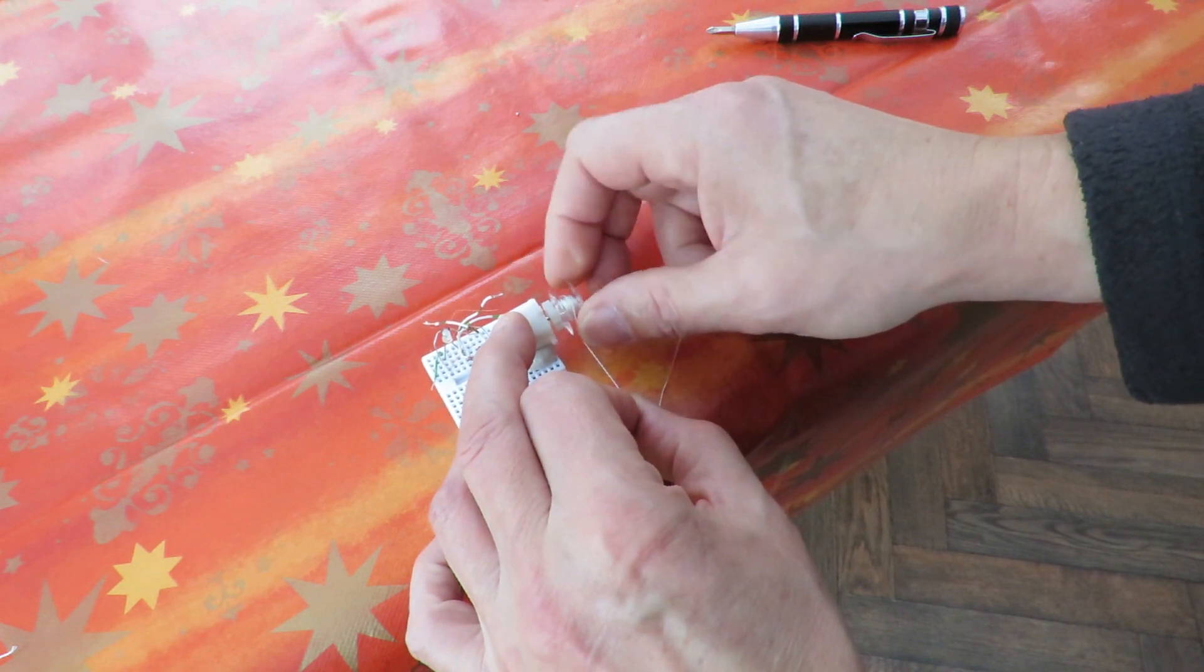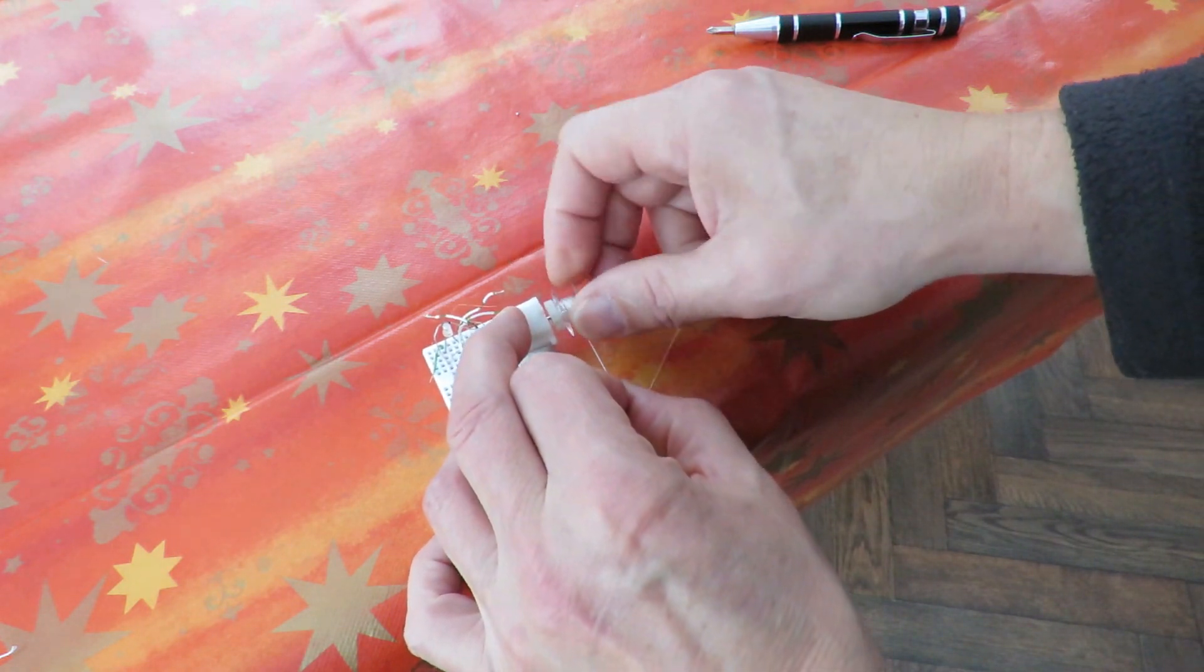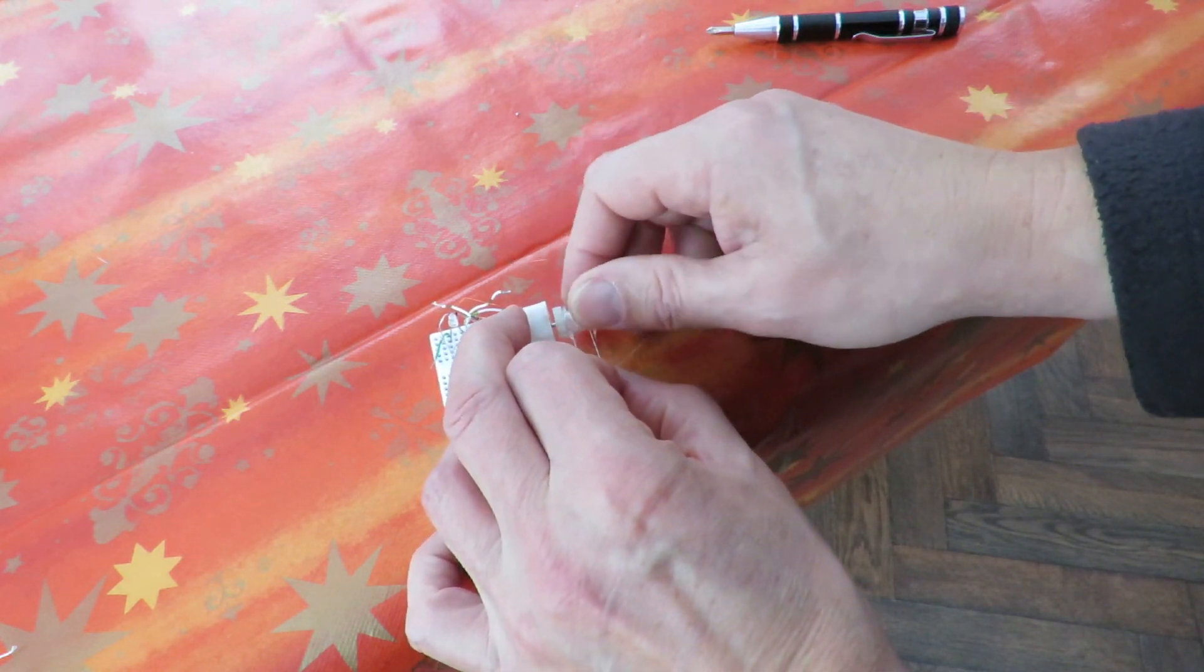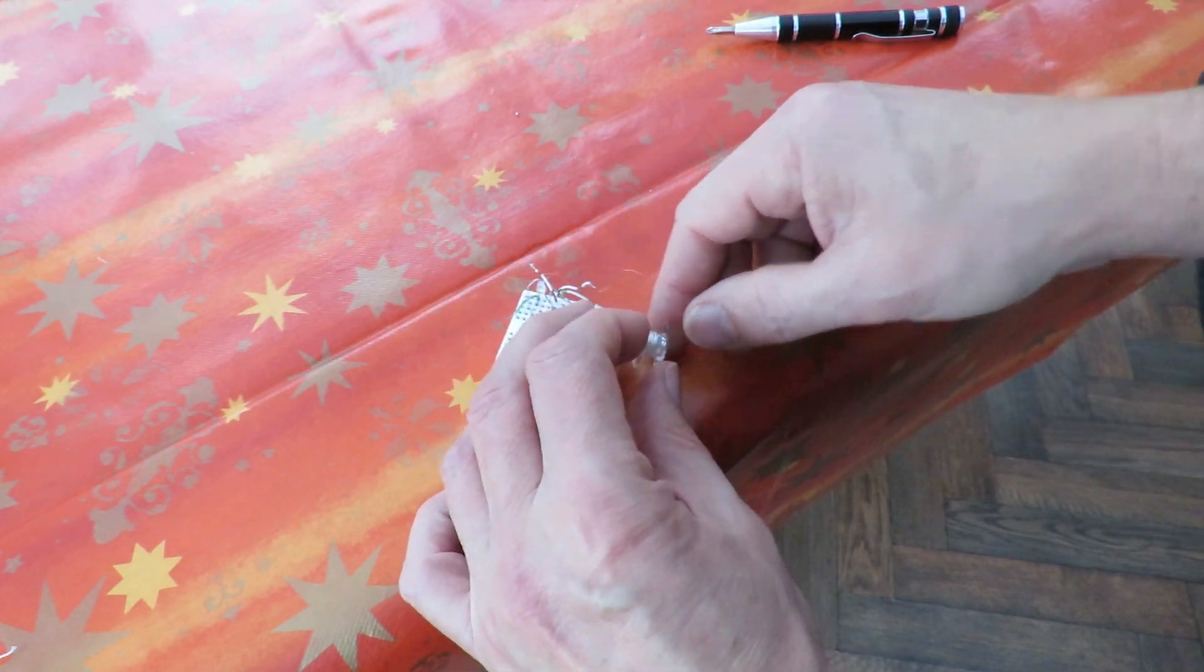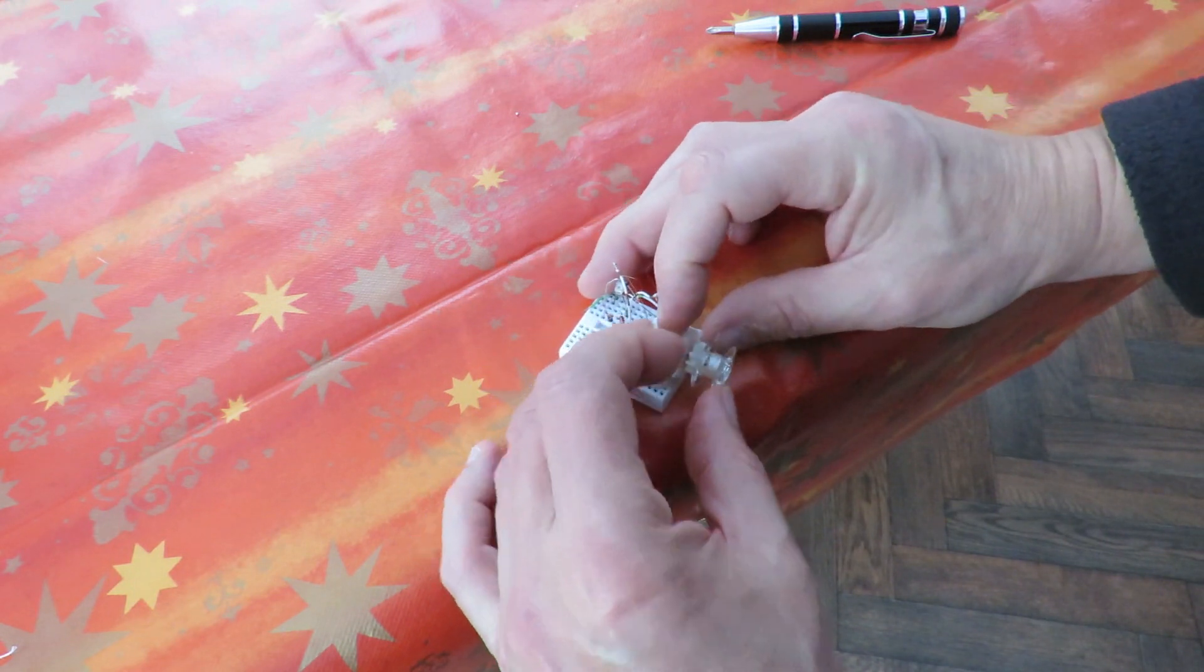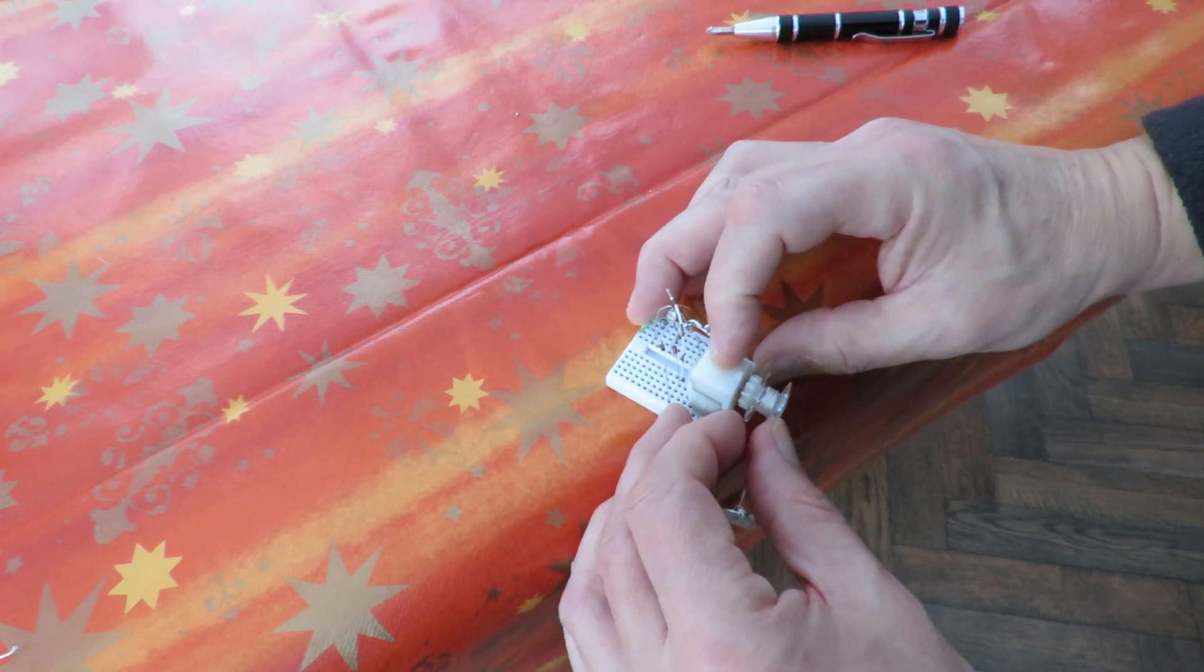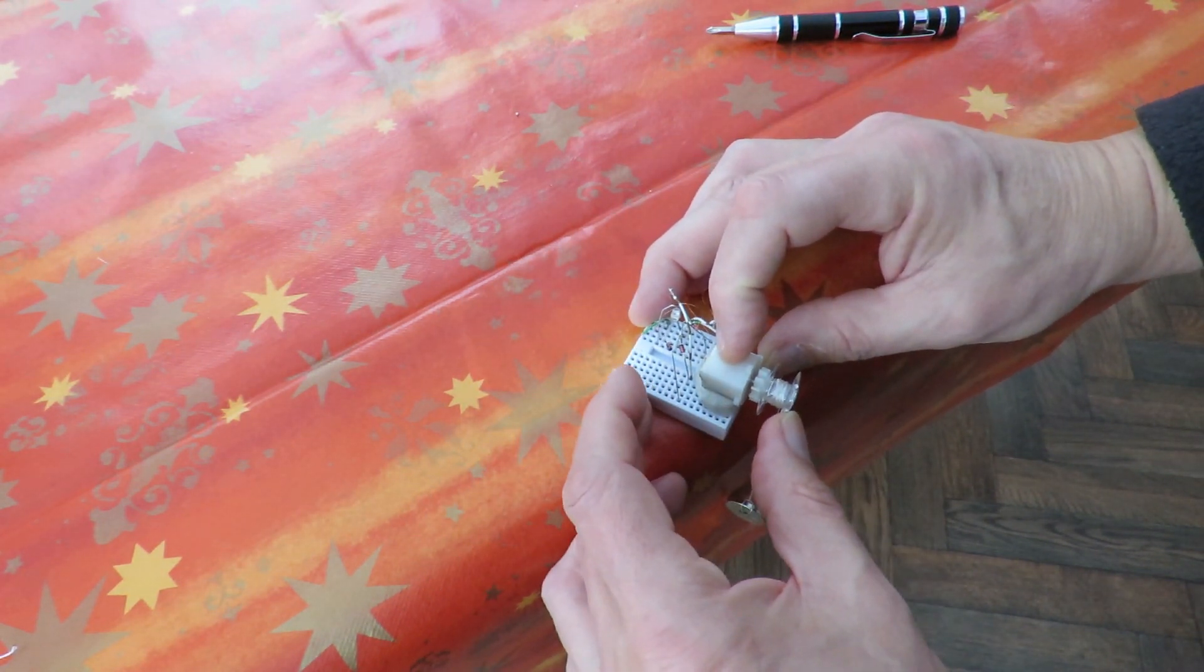The weight on the end is actually a magnet. I've used that so that I can just add extra washers if I needed any more weight, but I've found that this is enough weight anyway. So if we hold it carefully over the edge of the table...